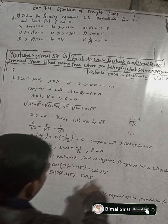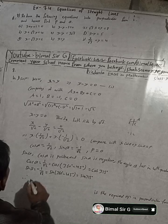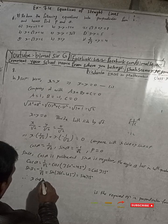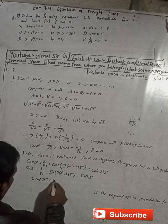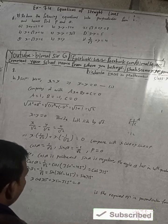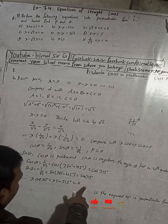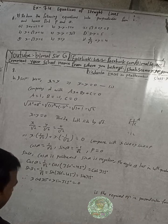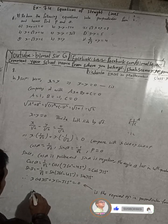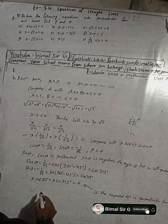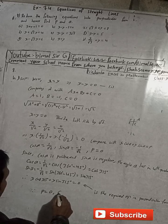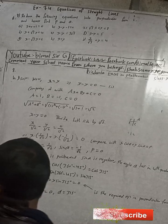So we have found cos α and sin α. Therefore this equation can be written as: x·cos 315° + y·sin 315° is equal to 0. This is the required equation in perpendicular form, where α = 315° and p = 0.